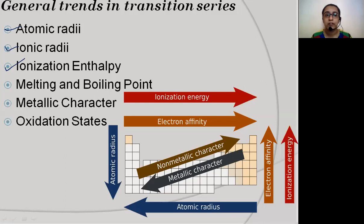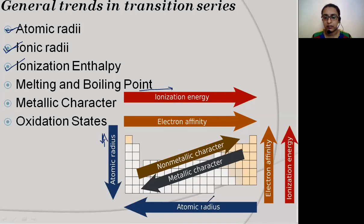Before that, we will quickly revise atomic radii and ionic radii - how these trends vary in the transition series. As you go down the group in the periodic table, atomic radii increases. As you go from left to right in the periodic table, atomic radii decreases. Ionization enthalpy is inversely proportional to atomic radius, meaning as atomic radius increases, ionization energy decreases.